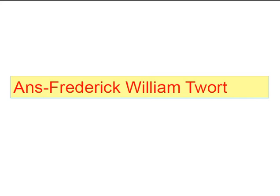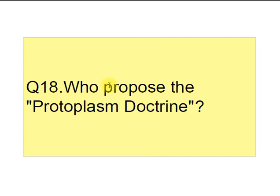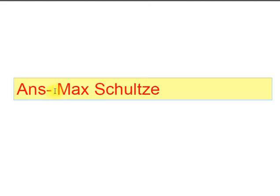Question number eighteen: who proposed the protoplasm doctrine? The protoplasm doctrine was proposed by Max Schultz. He stated that all living cells are made up of a living substance called protoplasm. Protoplasm was first discovered by Purkinje.